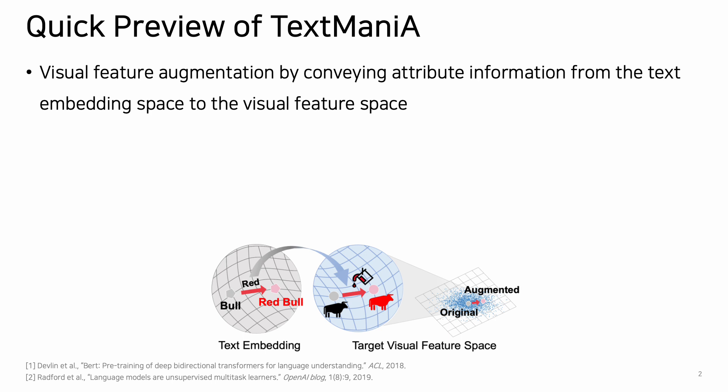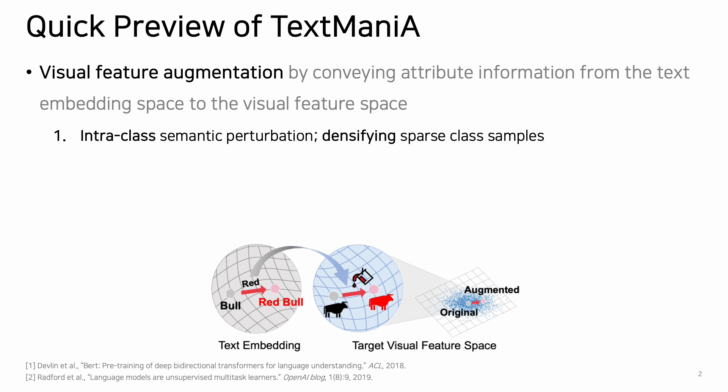In this work, we propose a new data augmentation method called Text Mania. Uniquely, it directly augments the visual feature by utilizing text attributes. First, Text Mania is an intraclass semantic perturbation. We densify all the samples, so it is especially effective for densifying sparse class samples.